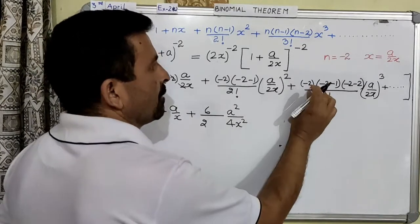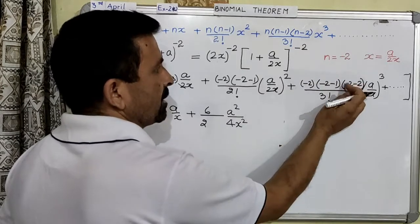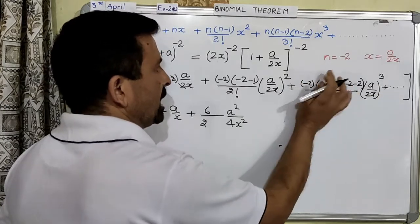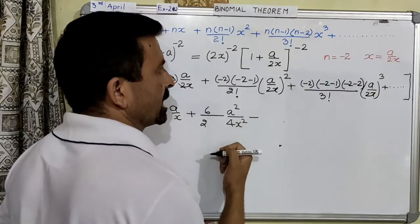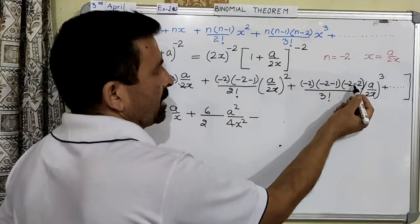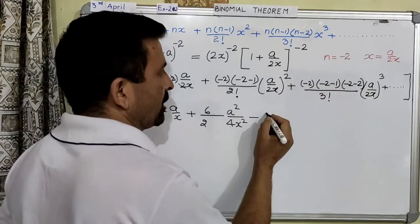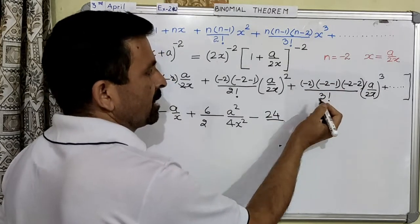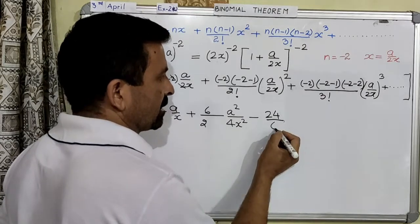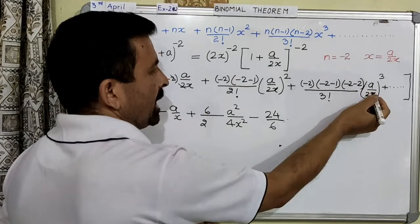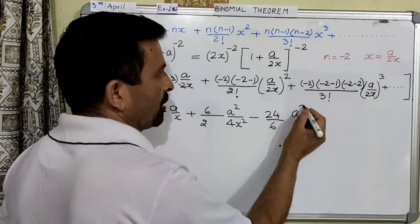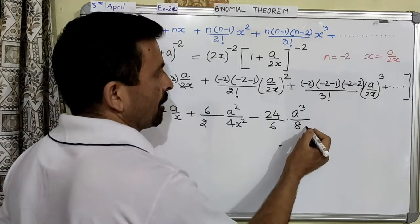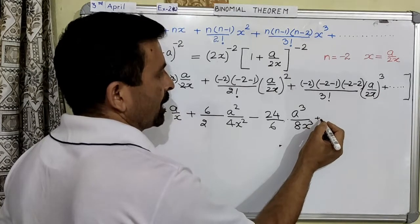Now next: from this, there are 3 negative quantities — this will be negative 4, this will be negative 3, this will be negative 2 — so total 3 negative quantities, therefore the result of this part will be negative. The product: 4 times 3 is 12, times 2 is 24. Denominator: factorial 3 as a product is 6. And then the result of a over 2x cubed will be a cubed over 8x cubed.